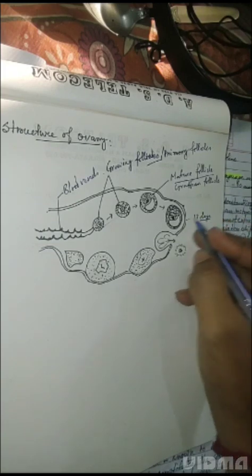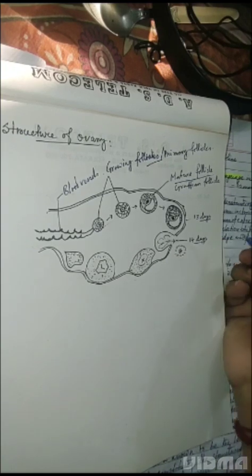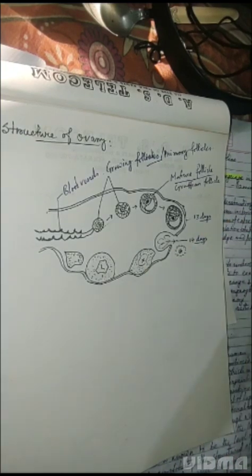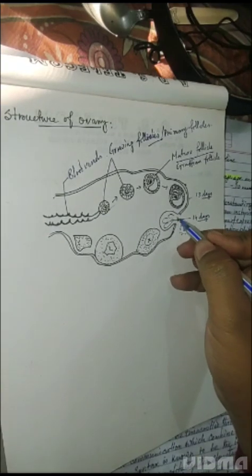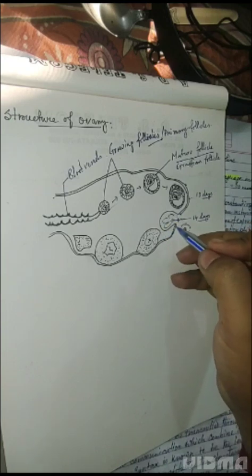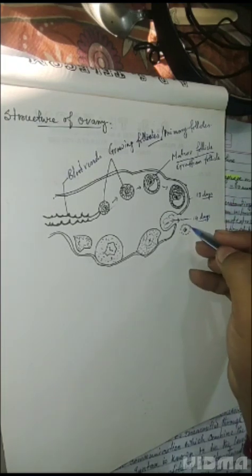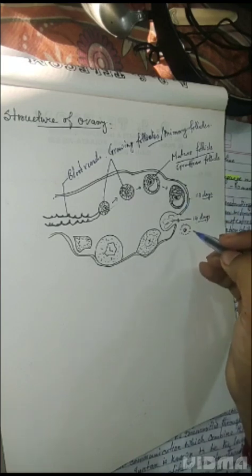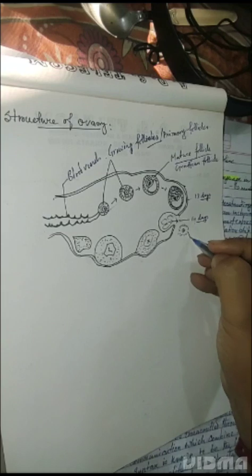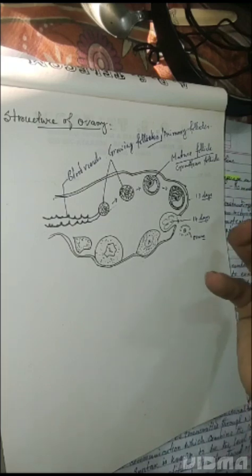On the 14th day on average — though this can vary; the ovulation period can vary in women by at least 7 days — this is the ovulation stage. In this stage, on the 14th day on average, the ovum is released from the Graafian follicle, or mature follicle. This ovum is released once a month.